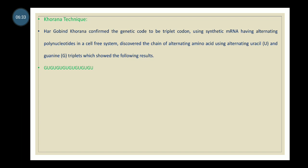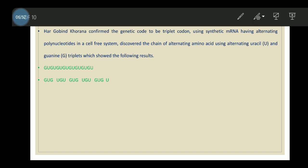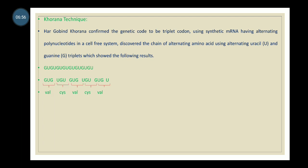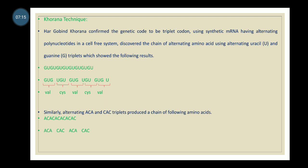Khorana took a heteropolymer of guanine and uracil with the sequence GU-GU-GU-GU and so on. The amino acids produced from these codons were valine and cysteine alternating: valine, cysteine, valine, cysteine, and so on. Similarly, alternating AC — adenosine and cytosine — bases produced a threonine-histidine polypeptide chain.